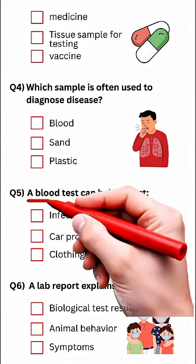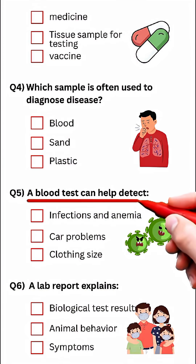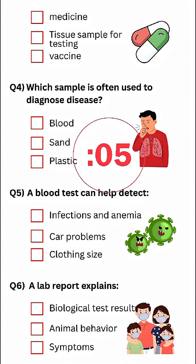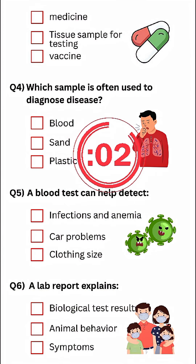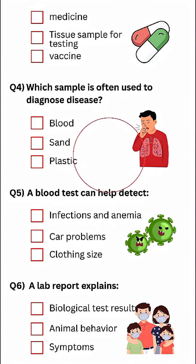Question five. A blood test can help detect... Answer: Infections and anemia.